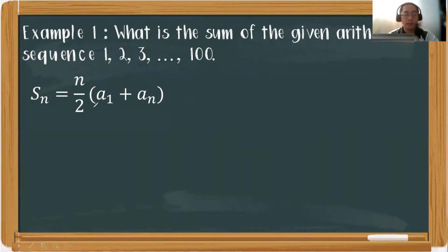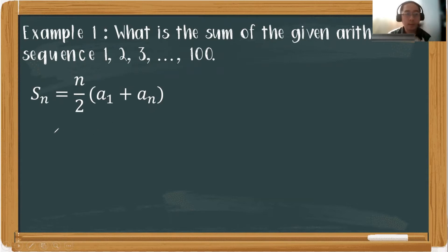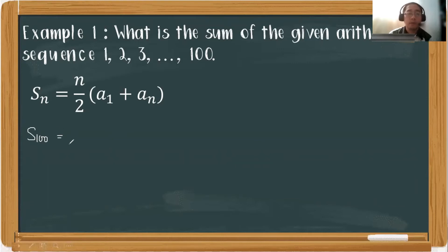First thing we will do is identify the formula. The formula as presented: S sub n is equivalent to n over 2 times the quantity of a sub 1 plus a sub n. All we need to do is substitute the given items. So we are looking for S sub 100. Then what is n? That is 100.